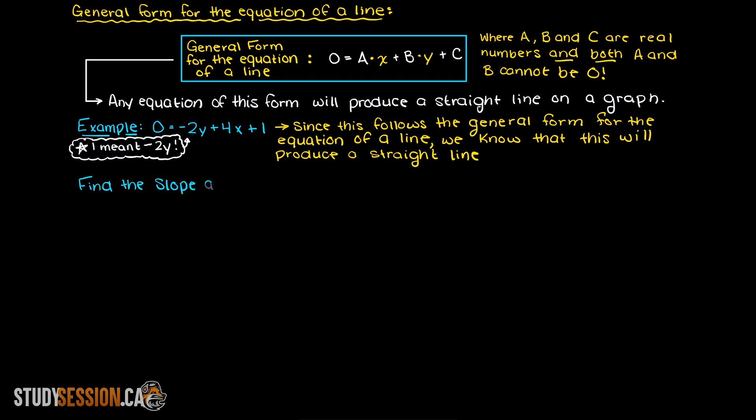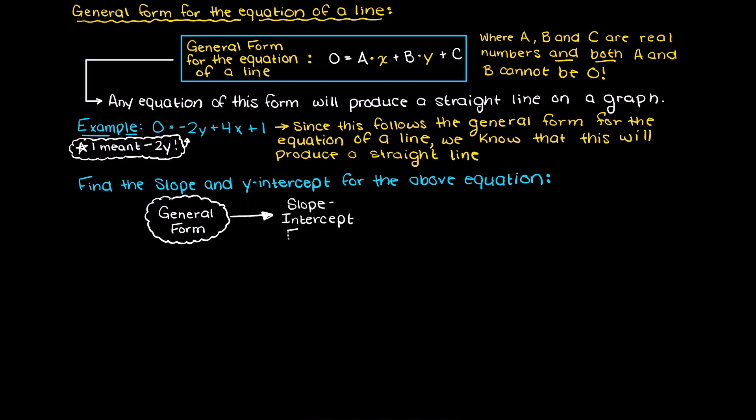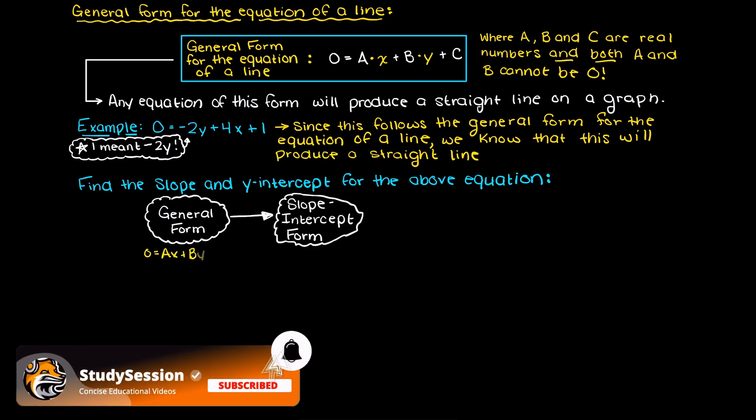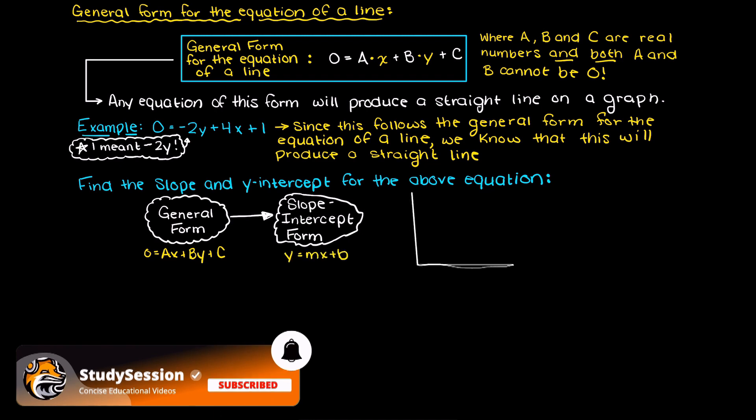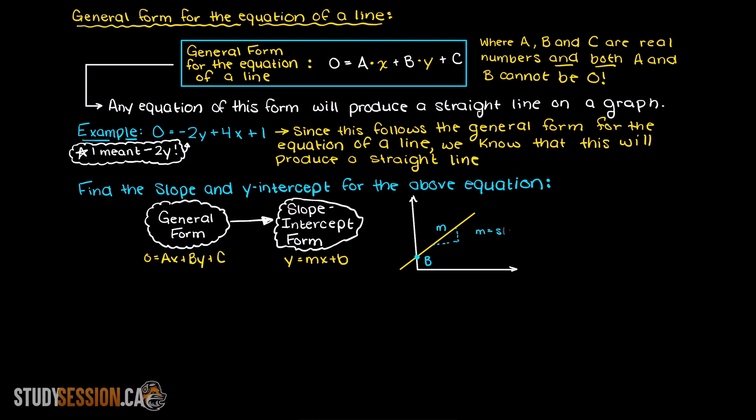But how do we find the slope and y-intercept from this equation? Well, let's think, we could probably convert this form back to our slope-intercept form. Let's remember what the slope-intercept form looks like. It is y equals m, our slope, times x plus some constant.